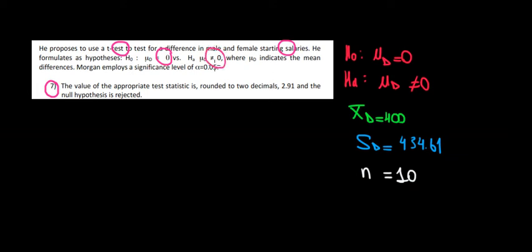Now we're going to check at the significance level of 5%. The value of the appropriate test statistic is 2.91. True or false? Let's see.